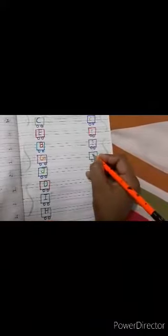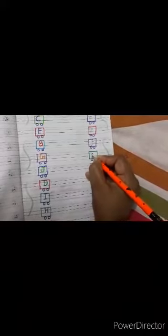G, capital G, and write here small G. D, J, and write here small J.